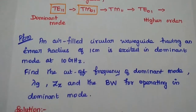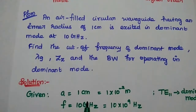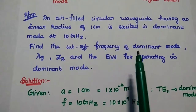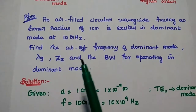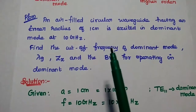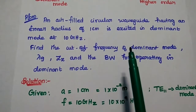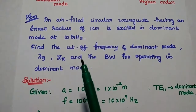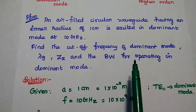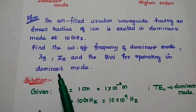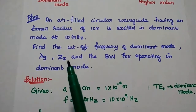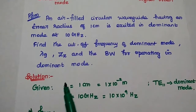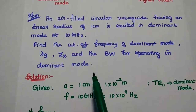Now we are going to solve one important problem in bandwidth. An air-filled circular waveguide having an inner radius of 1 cm is excited in the dominant mode at 10 GHz. Find the cutoff frequency of the dominant mode, lambda g (guide wavelength), wave impedance, and the bandwidth for operating in the dominant mode.